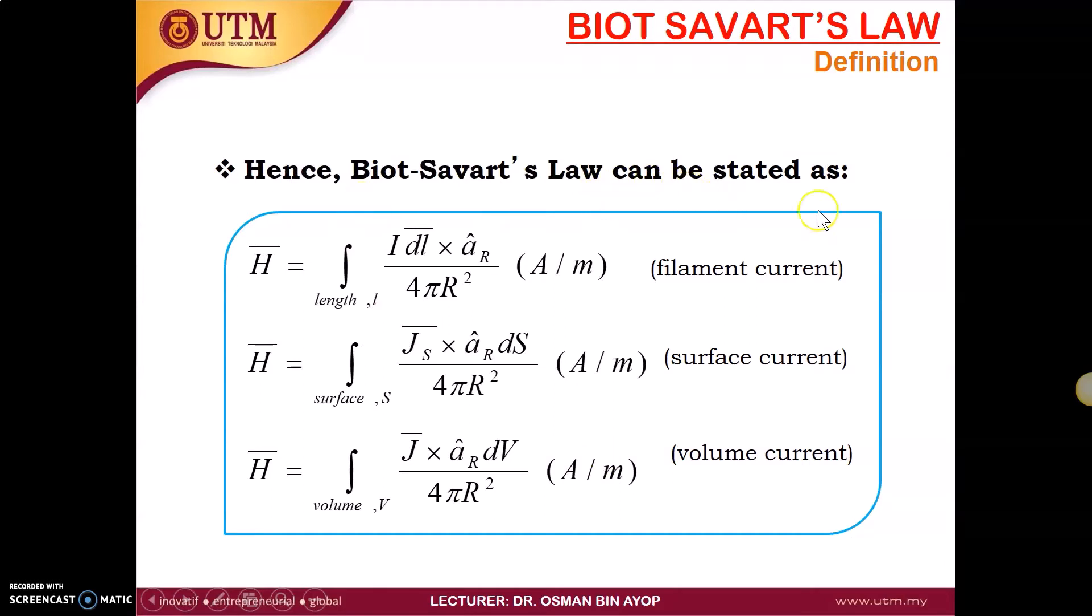Hence, the Biot-Savart law can be stated as H equal to the integration of current element I dL cross product with the unit vector AR divided by 4 pi R squared.